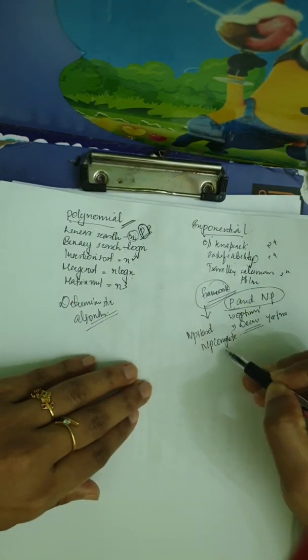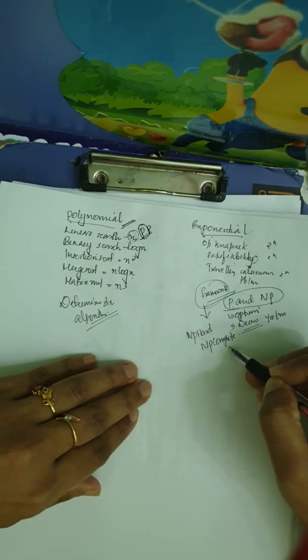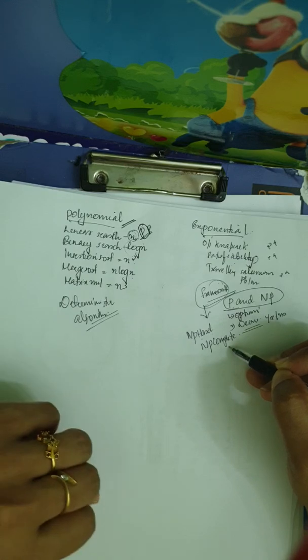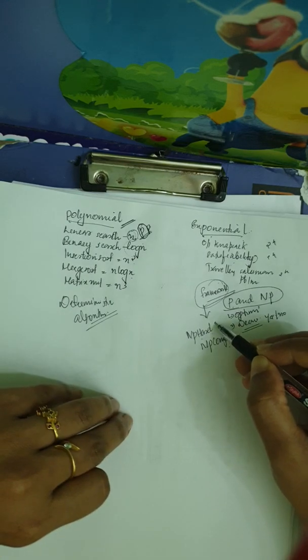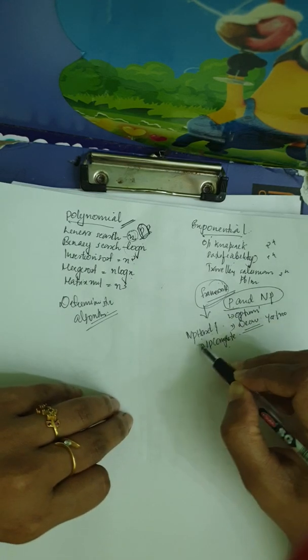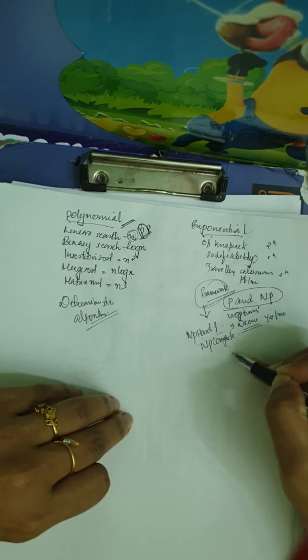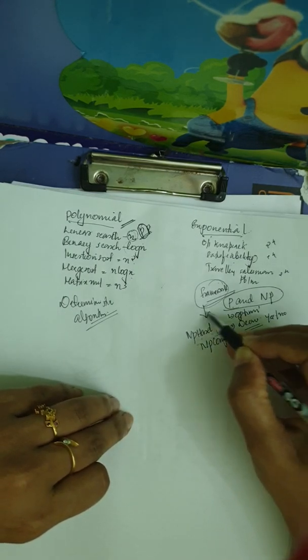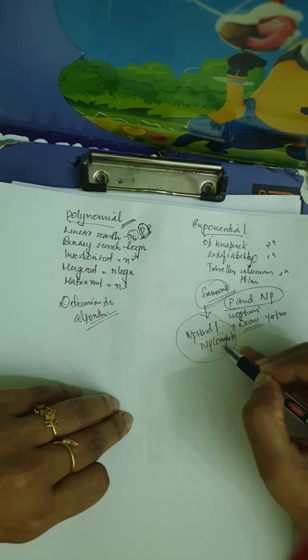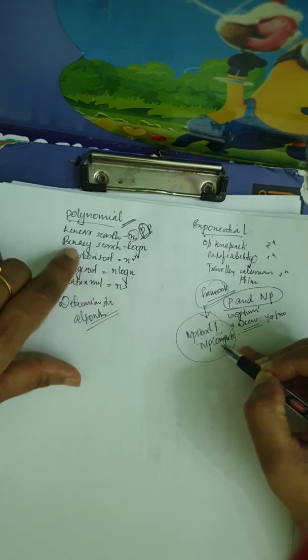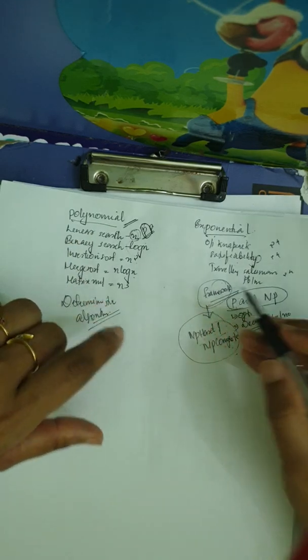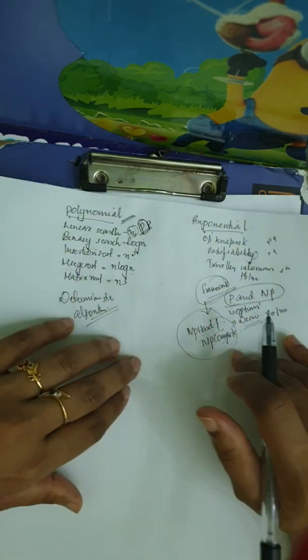In this framework, we have NP-Hard and NP-Complete problems. These are two key sets, and that is the P versus NP question.